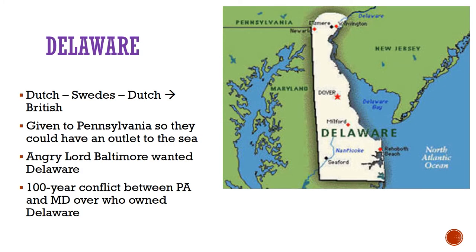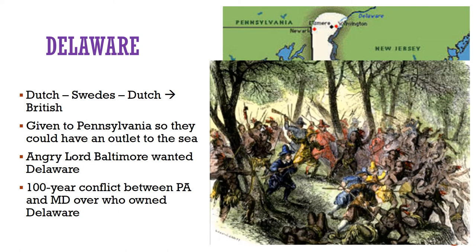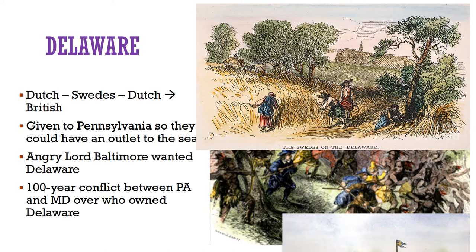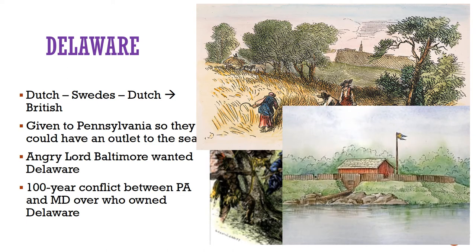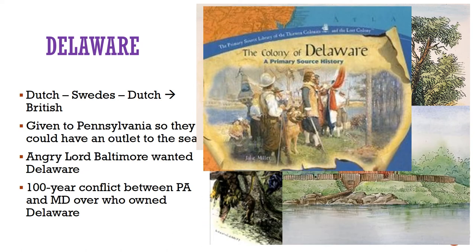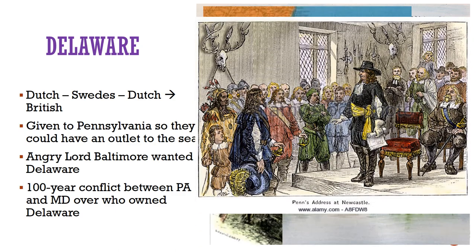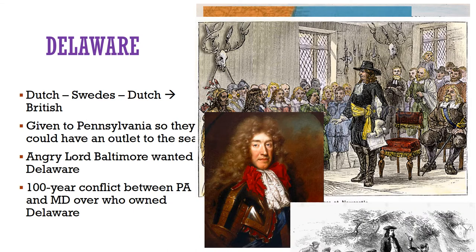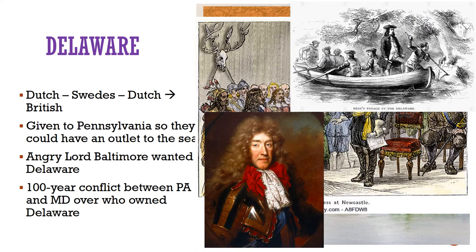Delaware. The Dutch first settled Delaware in 1631, although all the original settlers were killed in a disagreement with local Indians. Seven years later, the Swedes set up a colony and trading post at Fort Christina on the northern part of Delaware, but the Dutch got it back in 1651. Then in 1664, the British removed the Dutch from the whole East Coast. After William Penn was granted the land that became Pennsylvania in 1682, he persuaded the Duke of York to rent him the western shore of Delaware Bay so that his colony could have an outlet to the sea.